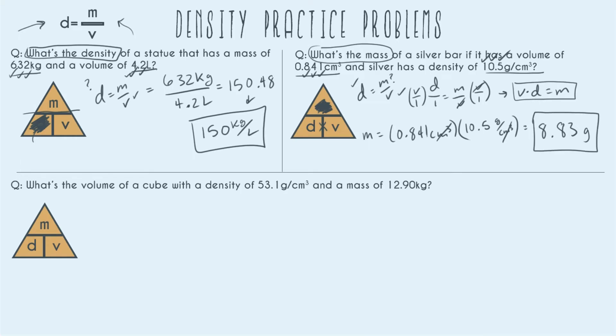So last but not least let's solve this one on the bottom. What's the volume of a cube with a density of 53.1 grams per centimeters cubed and a mass of 12.90 kg? So same formula, density equals mass over volume. So we're looking for volume, we have the density, we have the mass. Same formula, density equals mass over volume, so redrawing we have D over 1 equals M over V.